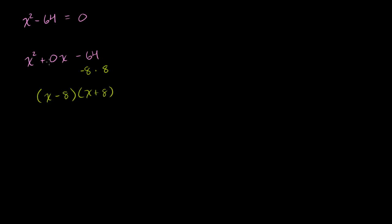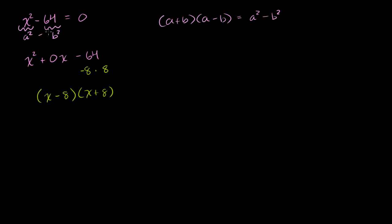You don't always have to go through that process — you might already remember that a plus b times a minus b equals a squared minus b squared. So if you see the pattern a squared minus b squared, you can immediately say that's a plus b times a minus b, where here a is x and b is 8.